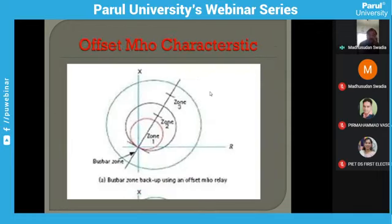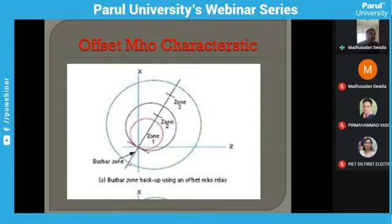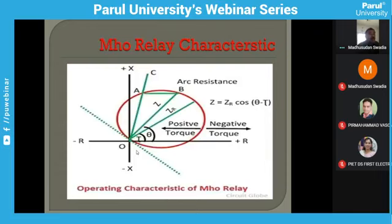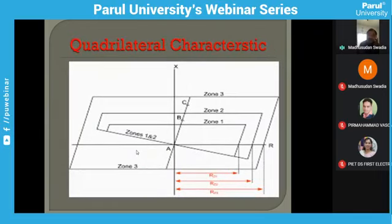The offset mho characteristic is a circle offset below the origin line. This is significant because it acts as backup to the busbar protection scheme — whenever a fault takes place on the rear side of the CT, it will operate after a time delay of 300 milliseconds or Zone 3 time. The quadrilateral characteristic is used nowadays in all numerical relays. Its major advantage is that it has a specific setting for both the reactance (X) and resistance (R) axis separately, which is especially useful when earth fault occurs with arc resistance.